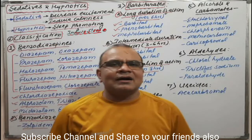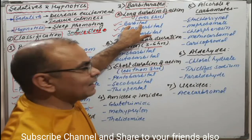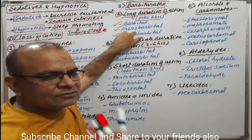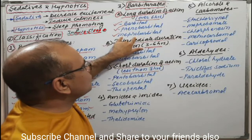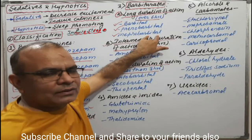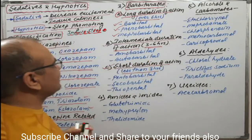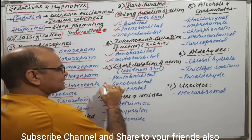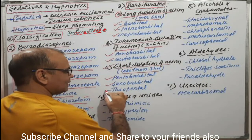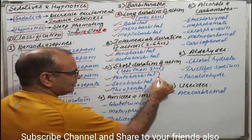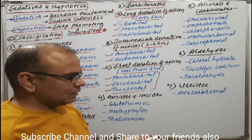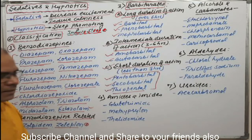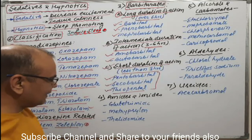Examples of barbiturates include phenobarbital as a longer-acting agent, and similarly mephobarbital, butabarbital, pentobarbital, secobarbital, and thiopental. These are the barbiturates which come under the category of sedative and hypnotics.